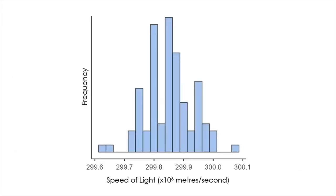We can also find out if the distribution is more or less symmetric about the center, or skewed to the left or to the right. In relation to this, you can also find out about the presence of outliers. But for this distribution, it doesn't look like there is a serious violation in symmetry or any obvious outliers.